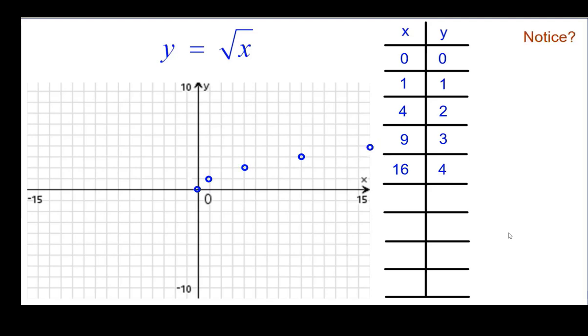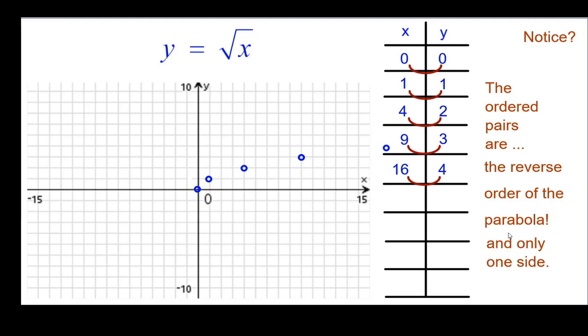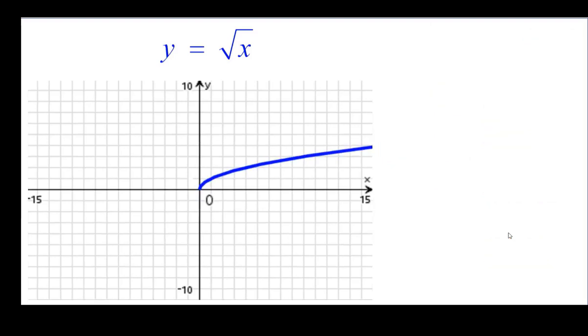So do you notice anything here about those ordered pairs, similar to ones we've done before? Look at them. The ordered pairs are the reverse order of the parabola on one side of that parabola. They're just switched. So this is what the graph should look like, connecting the dots. Graph of y equals the square root of x, or radical x.